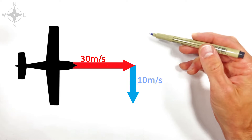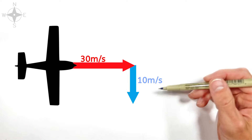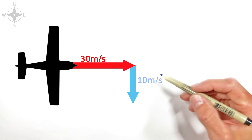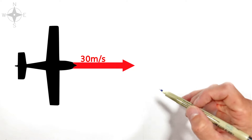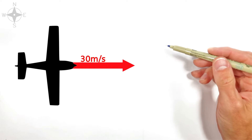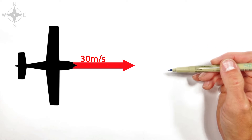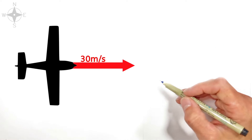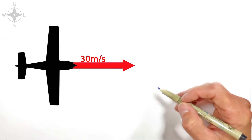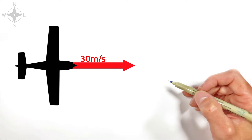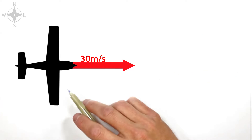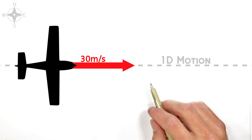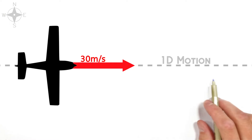Now I want to look at several different versions of this problem, but before we do that I want to look at the biggest misconception that people have when they go into two-dimensional vector addition. And really that comes from how they learned what a vector really is. Typically people learn about vectors when they're talking about one-dimensional motion, like this airplane just moving along towards the east.